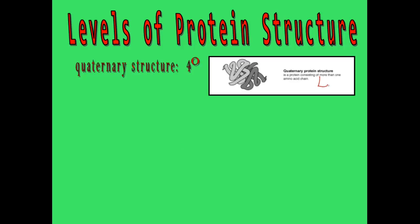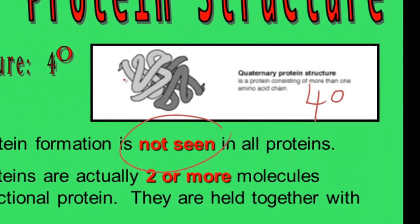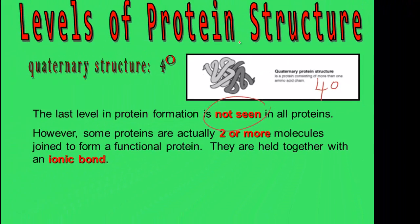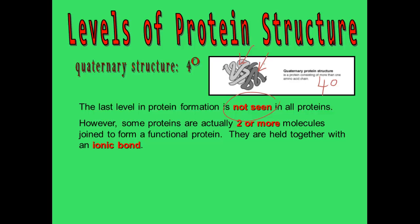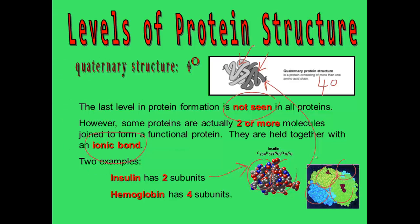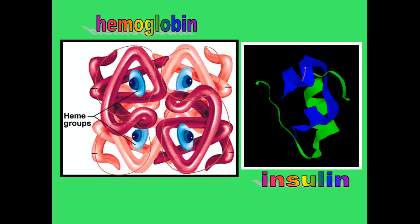The last level is quaternary structure, which is not seen in all proteins, just some. Once the three-dimensional structures of individual proteins form, they can sometimes join together ionically with other proteins to form the final functional protein. Insulin has two proteins bound together, and hemoglobin has four — these are the two examples you'll need to know for quaternary structure. Hemoglobin has four protein blobs joined together, and insulin has two.